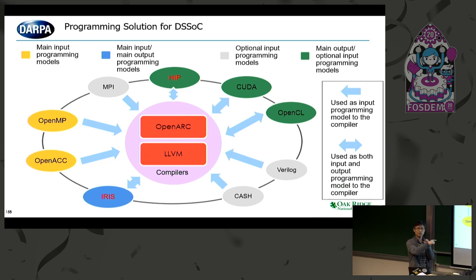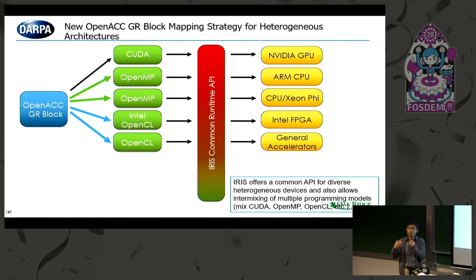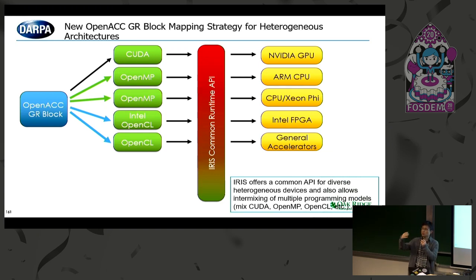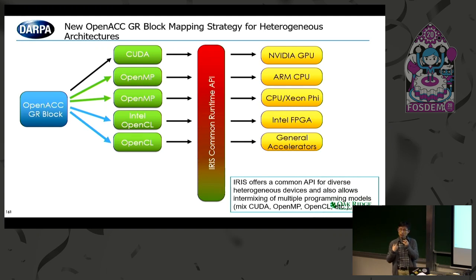Let's look at a concrete example of how we port GNU Radio blocks to heterogeneous devices using our framework. We assume the user can write a program using a high-level programming model like OpenMP or OpenACC. Suppose the user writes a GNU Radio block using OpenACC — our compiler performs source translation and generates output programs depending on the target architecture. If you want to run your block on an NVIDIA GPU, our compiler generates CUDA code. If you want to run on ARM or other CPU-like architectures, our compiler automatically generates OpenMP code.